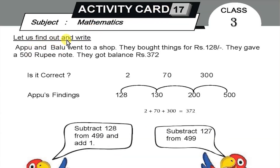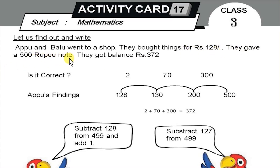Apo and Baloo went to a shop. They bought things for $128. They gave a $500 note. They got a balance of $372.